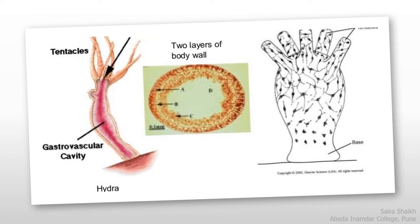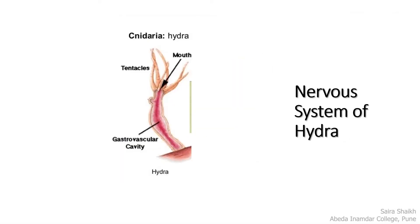The next phyla is phylum Cnidaria, which includes the animals hydra, jellyfish, corals, and sea anemones. Now we will study about the nervous system of hydra, which comes in the phylum Cnidaria.